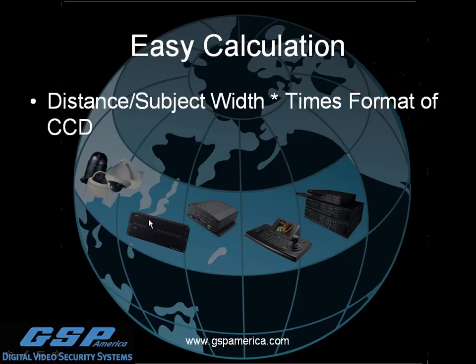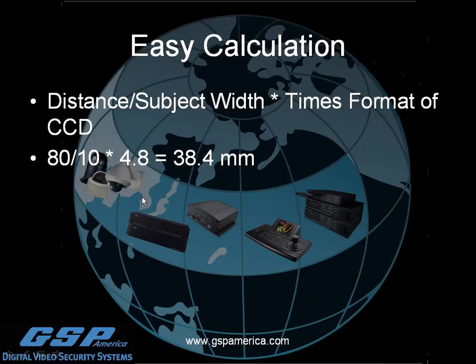There's also an easy manual calculation: take the distance divided by the width, then multiply by the CCD format size. For a one-third inch chip, the horizontal dimension is 4.8mm. So: 80 feet divided by 10, times 4.8, gives you 38.4mm. This is a simple way to calculate focal length when you're in the field without access to an online calculator or a wheel calculator.